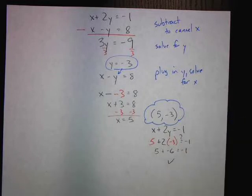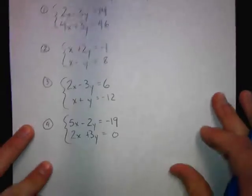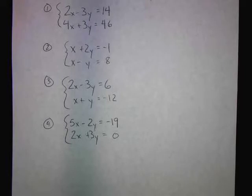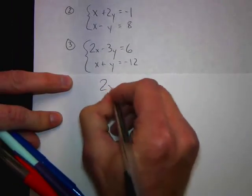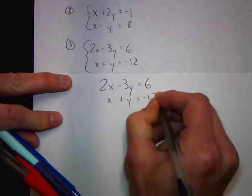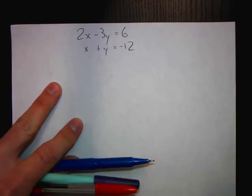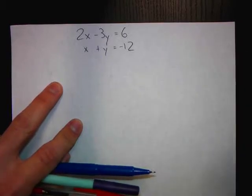We can subtract entire equations to cancel out a variable. Now back to the original set — we are able to add to cancel, we're able to subtract to cancel. But what about that third system? It looks a little weird because I can't just get rid of anything. If I added these two equations, nothing would cancel. If I subtracted, again nothing would cancel.